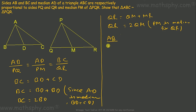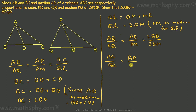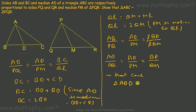AB over PQ equals AD over PM equals BC over QR. Substituting BC with 2BD and QR with 2QM, we get AB over PQ equals AD over PM equals BD over QM. Therefore, triangle ABD is similar to triangle PQM.